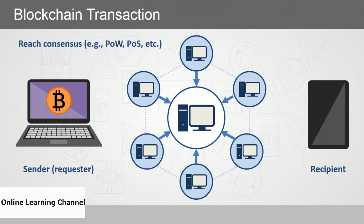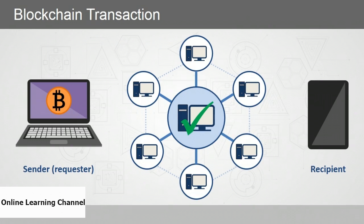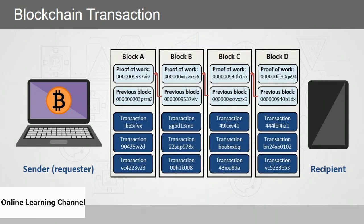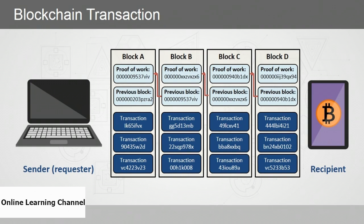The nodes compete to solve the problem using proof of work or proof of stake. The first node to solve the problem broadcasts its results to the network, and nodes validate the solution. Using your public key and the generated signature, anyone can validate your ownership of bitcoin, ensuring you're not trying to double spend it. Once consensus — more than 50% of the network — agrees, the transaction is validated and becomes part of the block being added to the blockchain. The new block includes a hash matching the previous block, and the recipient now has the bitcoin.